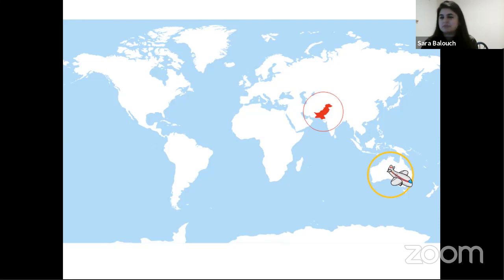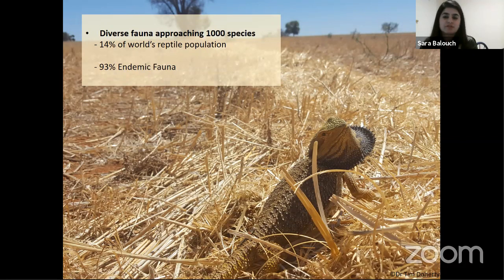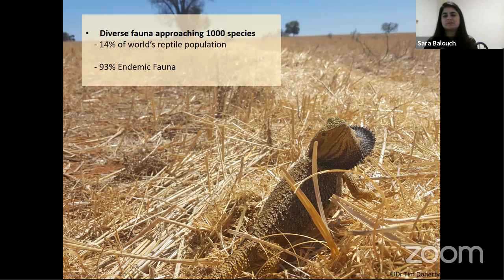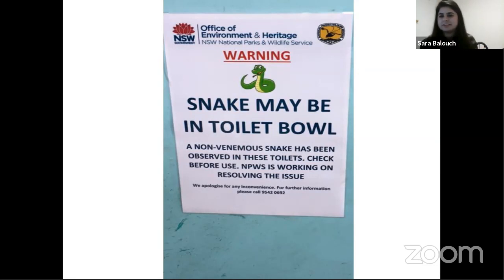I flew from Pakistan to Australia three years back to start working on reptiles, after doing some small projects on reptiles and snakes. My journey started in Melbourne at Deakin University and I began working in New South Wales. Australia has a diverse range of reptiles — about 1,000 species. 14% of the world's reptiles actually live in Australia and 93% of them are native to Australia.